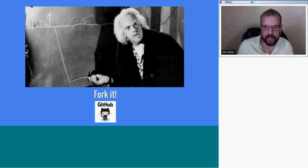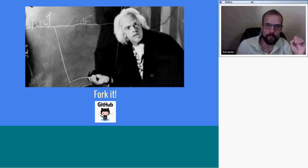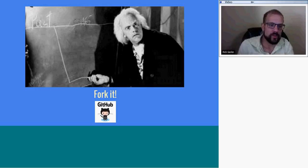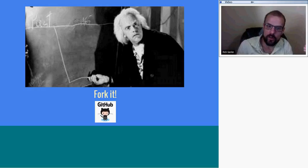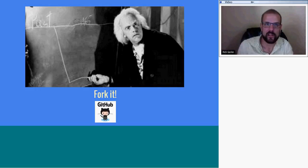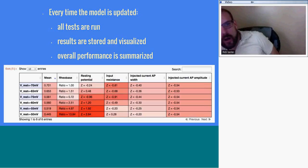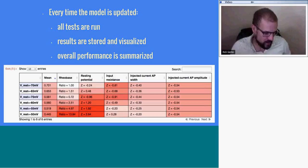If you agree with how the test was done, great. If you disagree, you can always go back and fork the repository, make changes to the test, recommit, and have all those tests run again to see how your version does. You can then go through GitHub issues or offline and try to resolve those disagreements — or maybe we just end up with different sets of tests because we don't agree, and that's okay. Based on GitHub, whenever the model is updated all the tests are run, the results are stored and visualized, and the performance of the model is summarized.